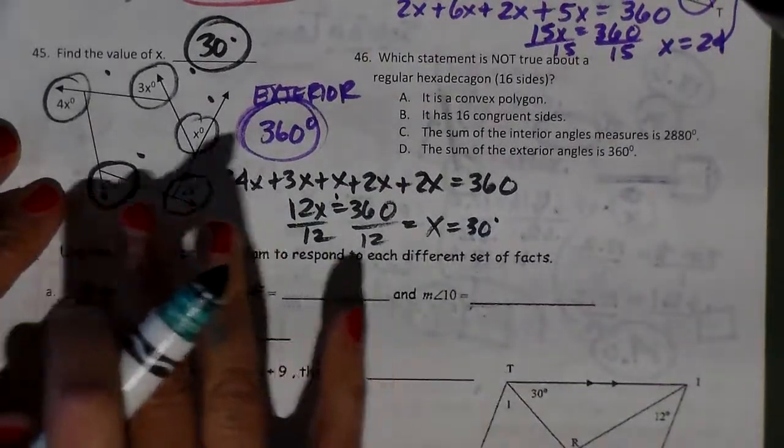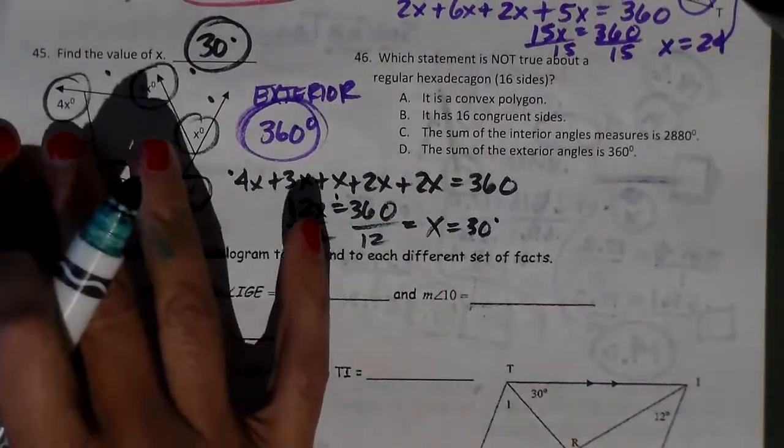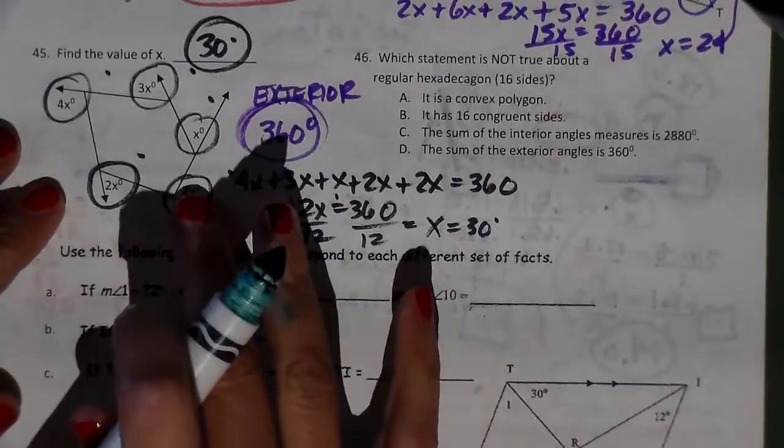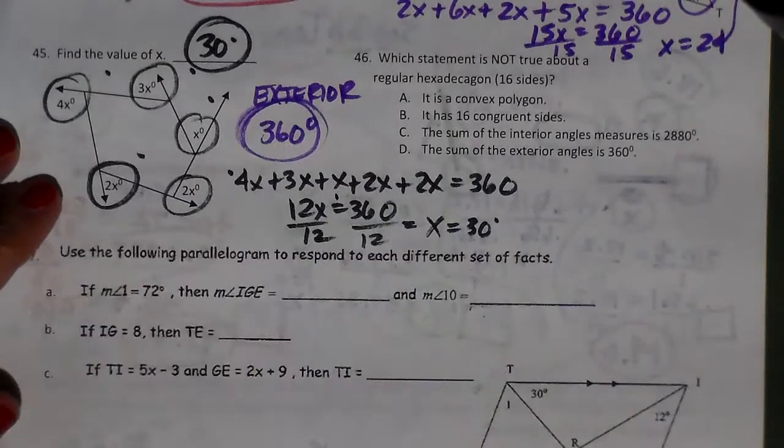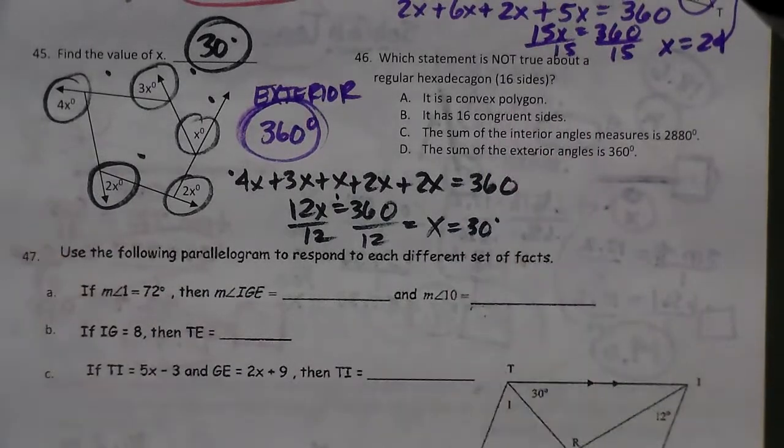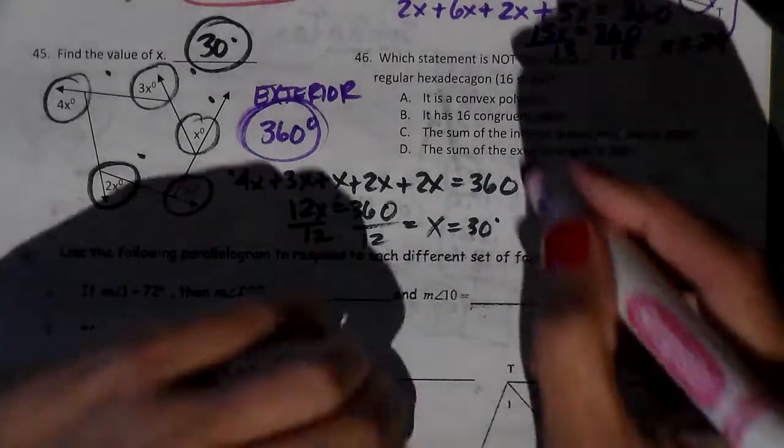Now if I wanted to find each of these angles, I would just take that 30 and plug them in. This would be 120, this would be 90, that would be 30, that would be 60, and that would be 60. And when you add those together, it would be 360.